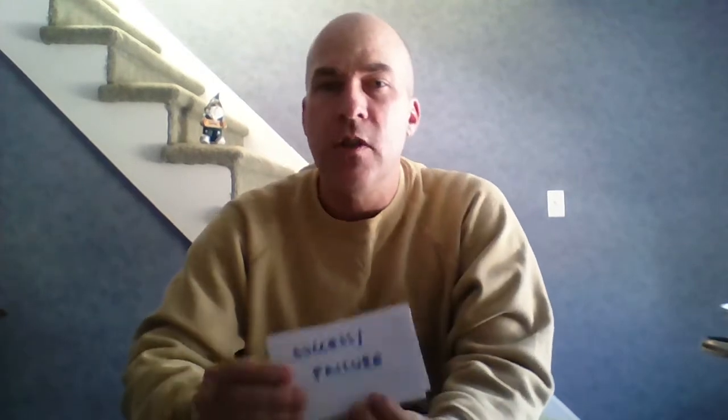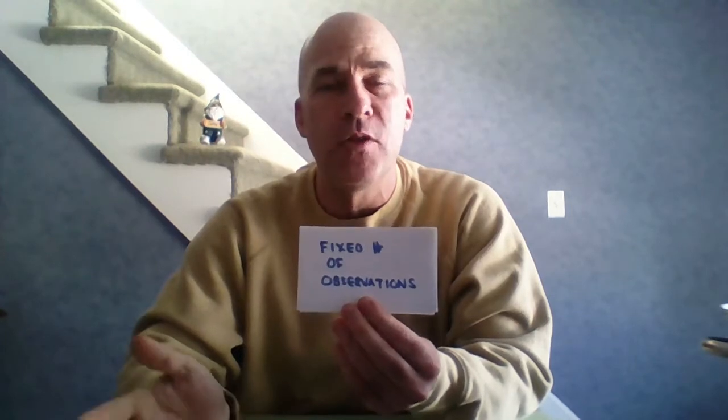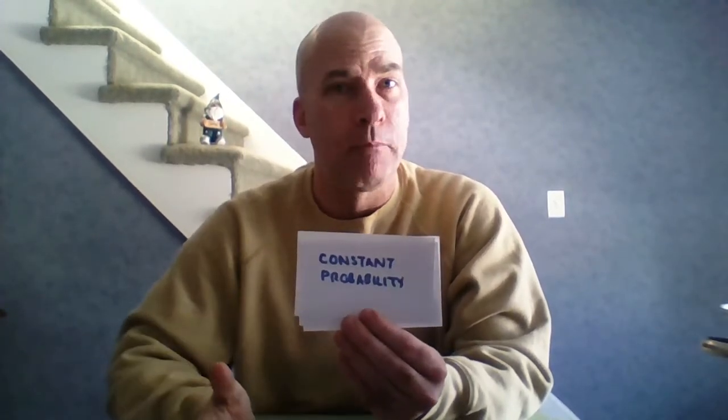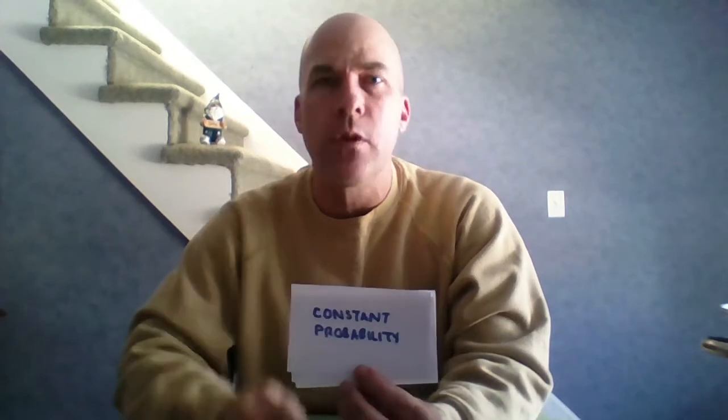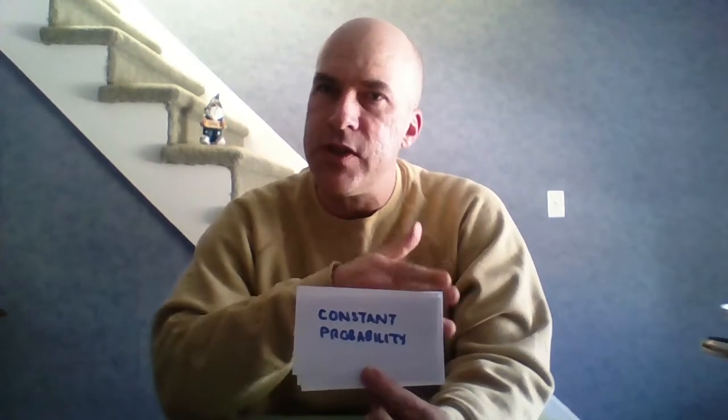Thinking back to binomial: there are four things that make a binomial distribution. First, you have to have success or failure every single time. Second, you have to have a fixed number of observations. Third, you have to have independent trials. And fourth, you have to have a constant probability. Those are the four things to memorize for binomial.